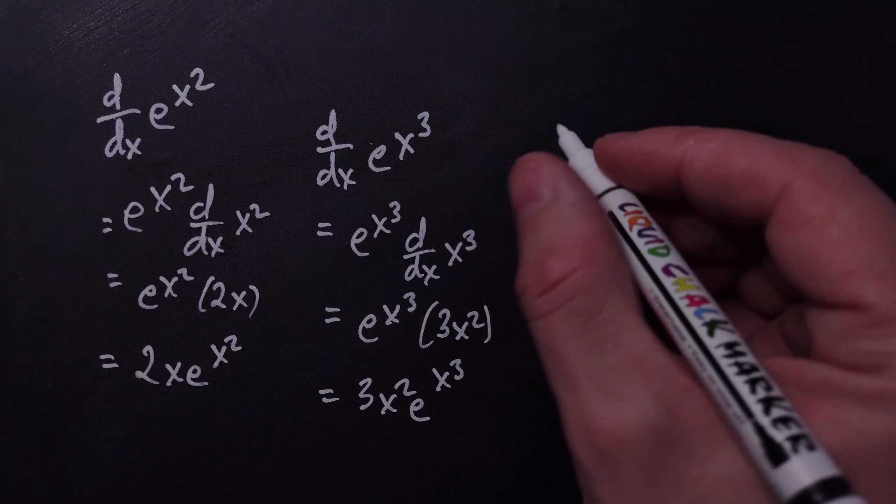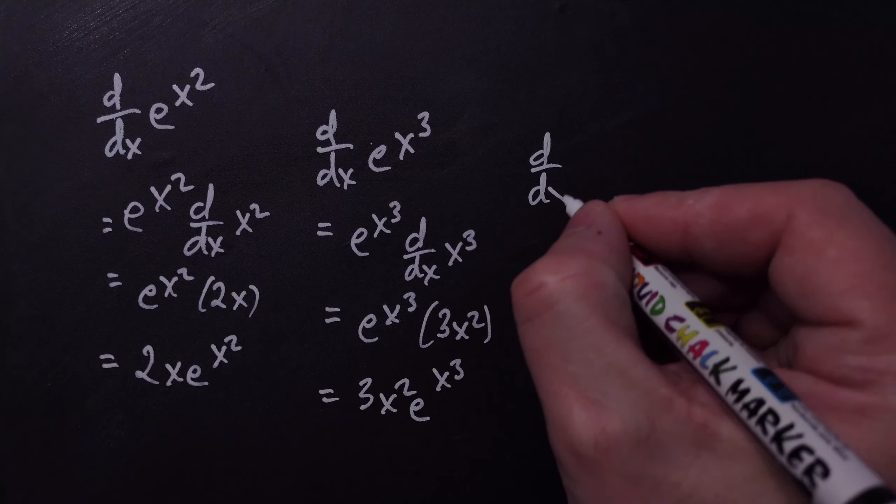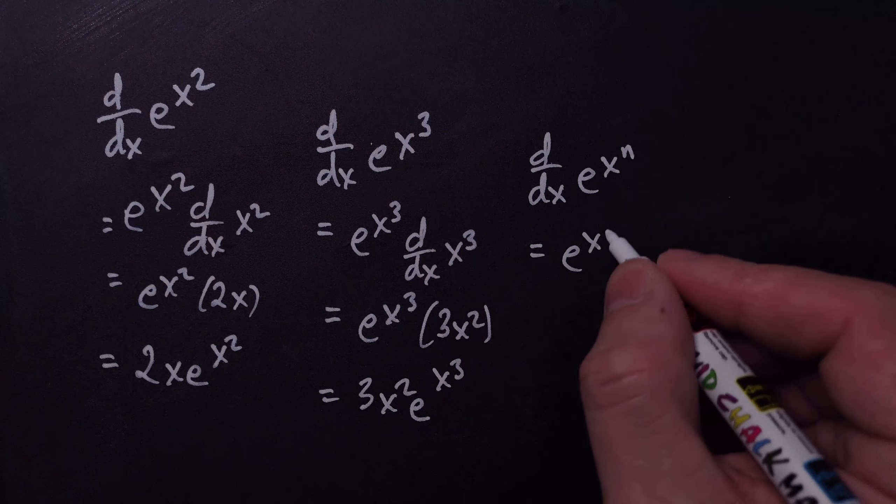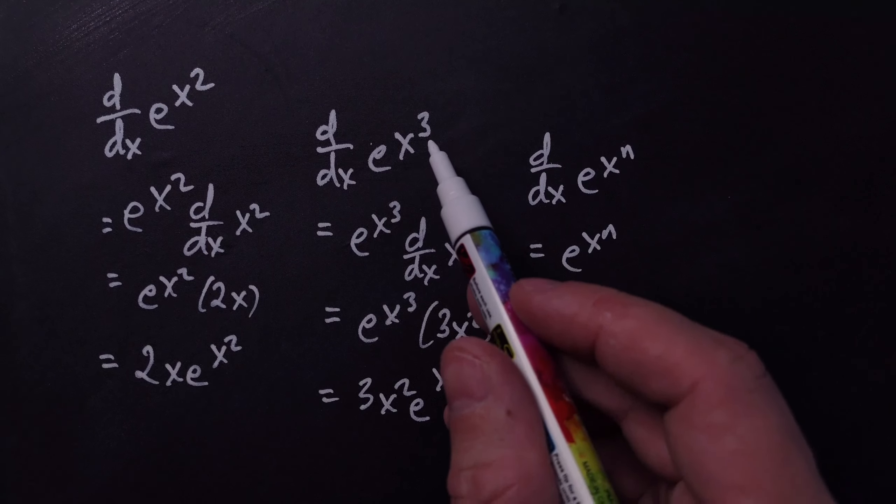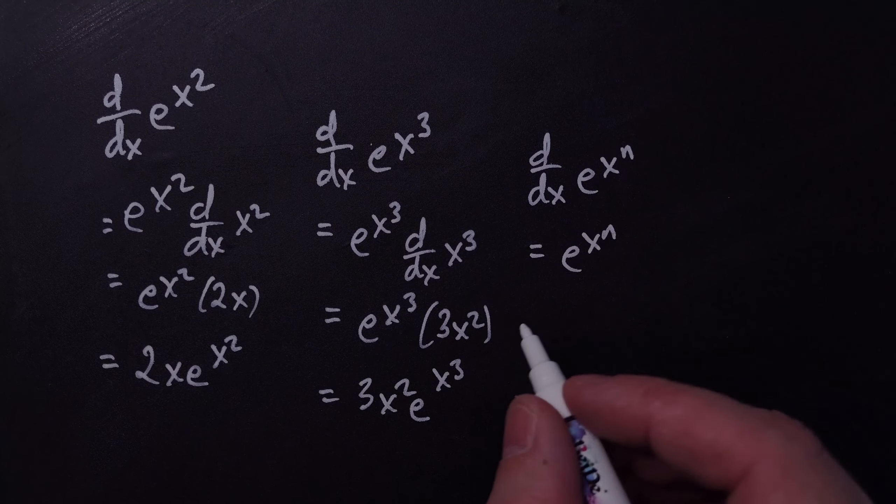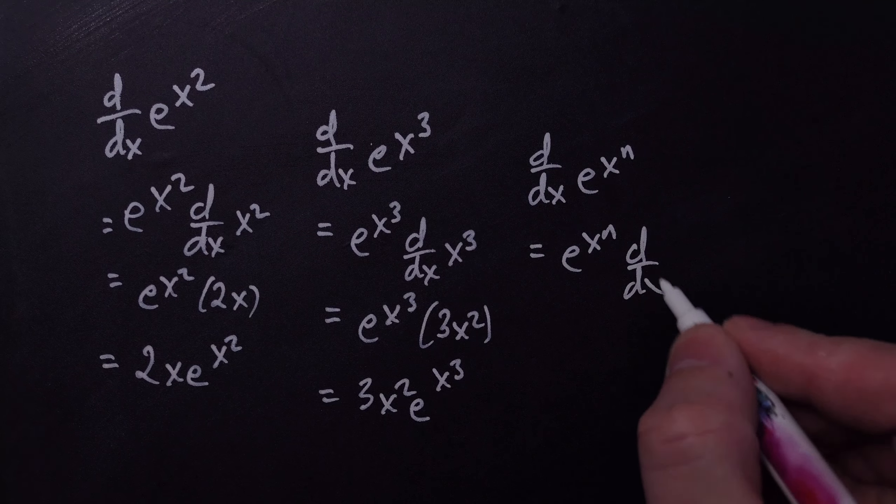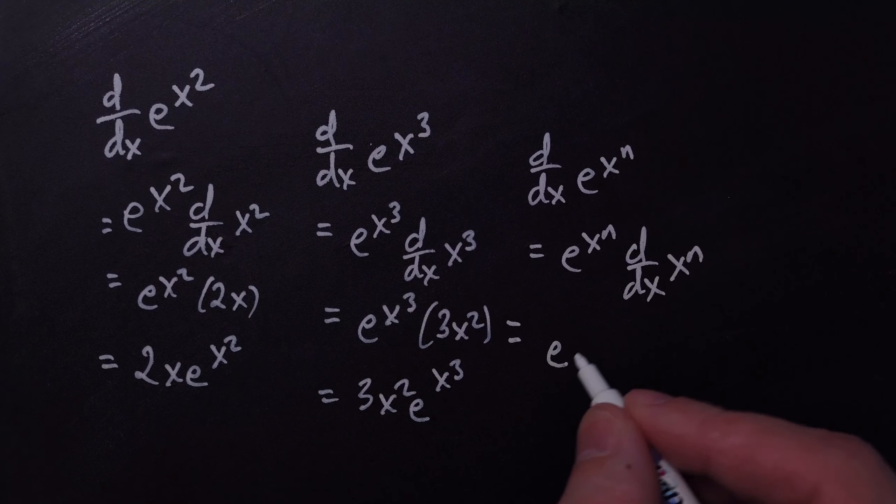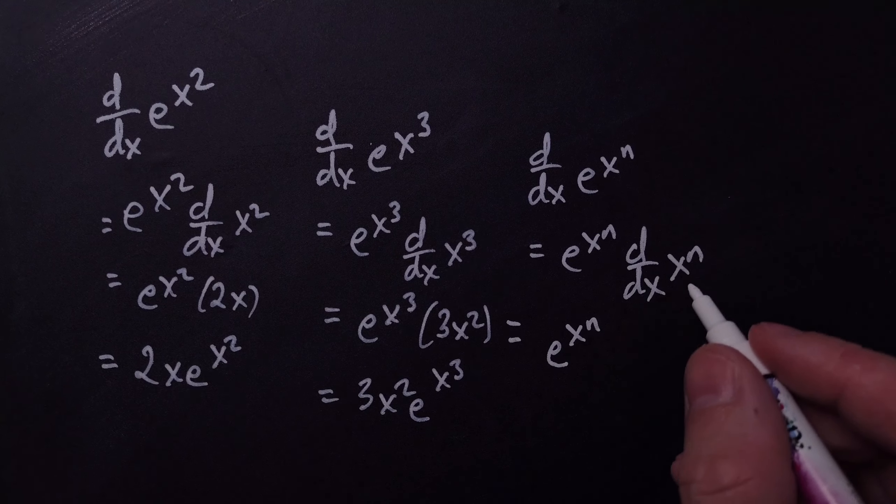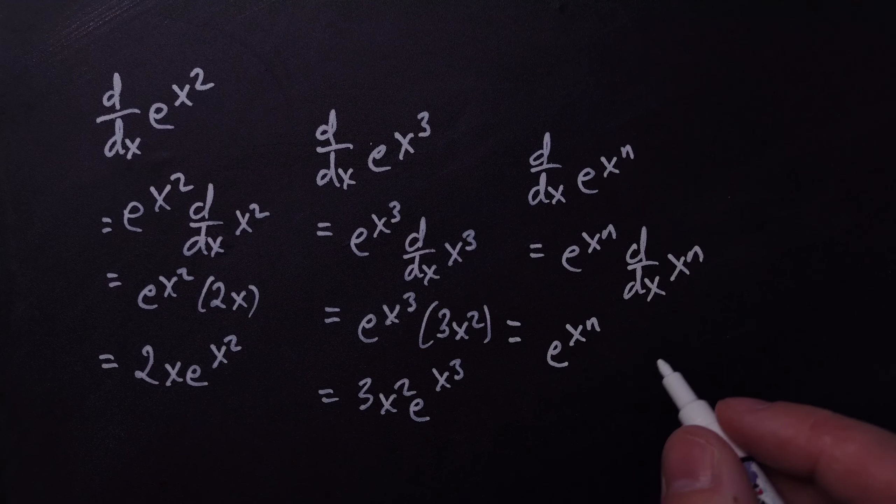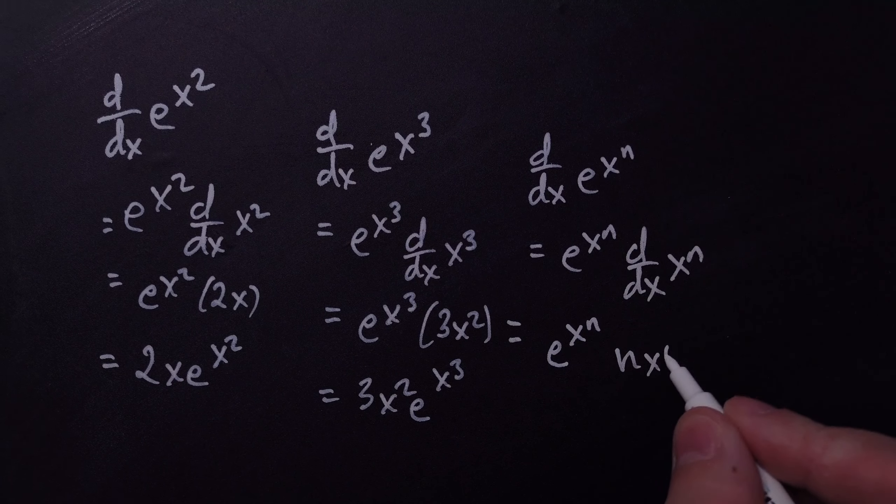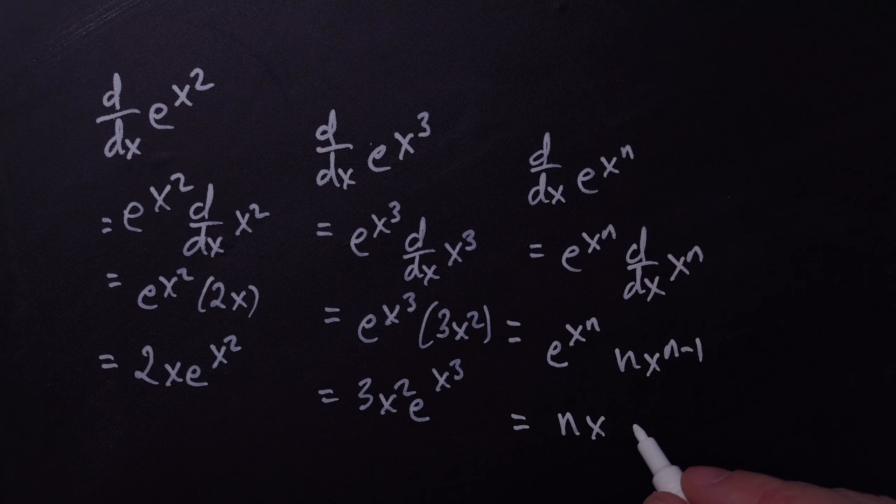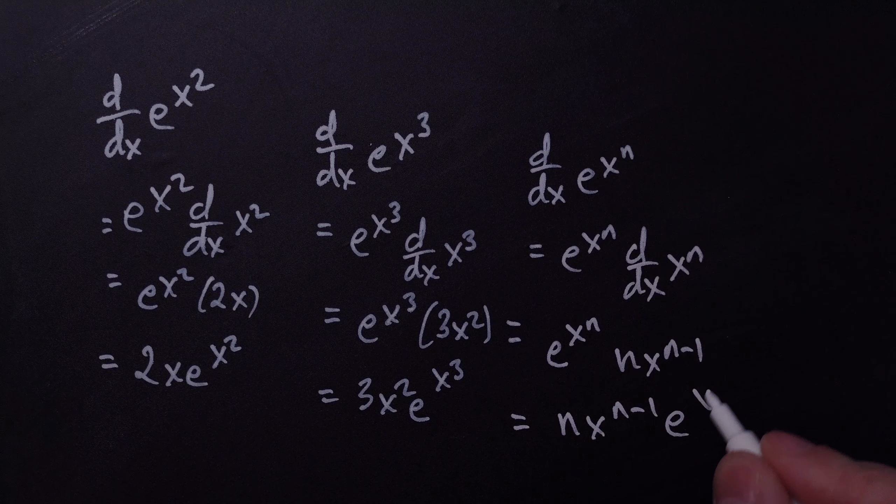This is suggestive of a general pattern that we can apply pretty much every time, which is that the derivative with respect to x of e to the x to the n is, you copy the e to the x to the n, like in this case n is 3, in this case n is 2, and so on. And then you continue, and then you multiply it by the derivative with respect to x of the x to the n this way, and then you continue down below, so you have e to the x to the n, and then the derivative of x to the n by the basic power rule is nx to the n minus 1, and then by convention we move this out front, so we get nx to the n minus 1 multiplied by e to the x to the n.